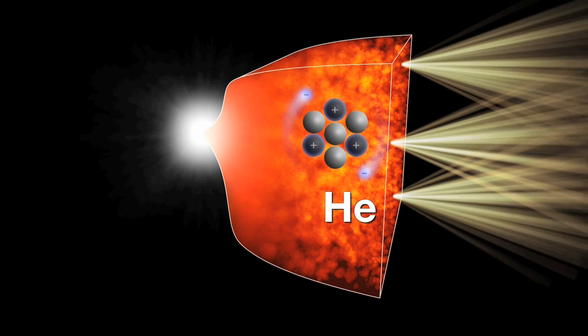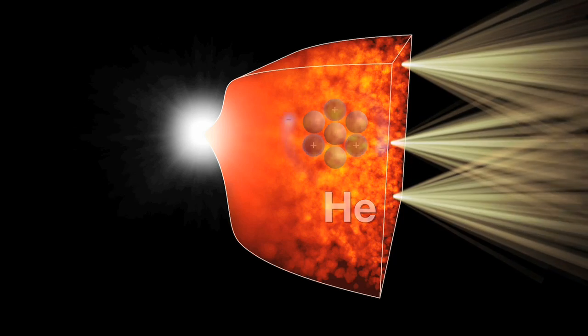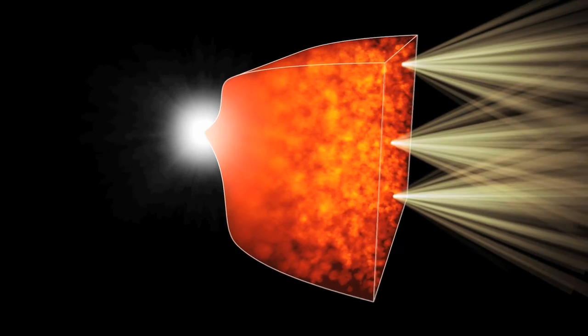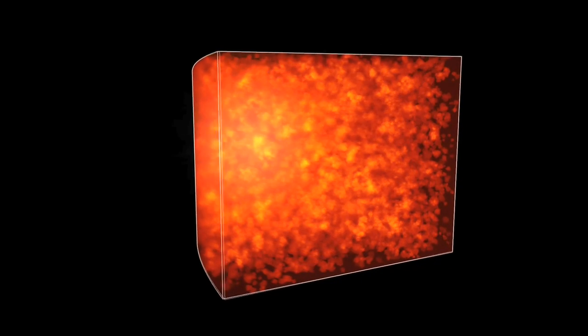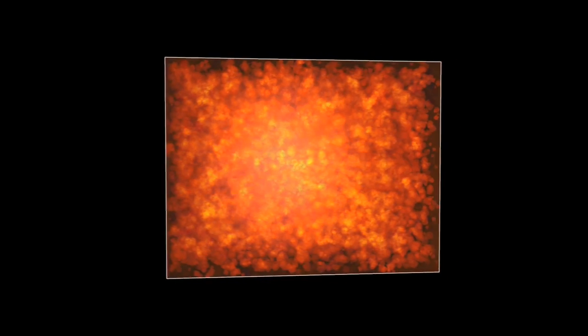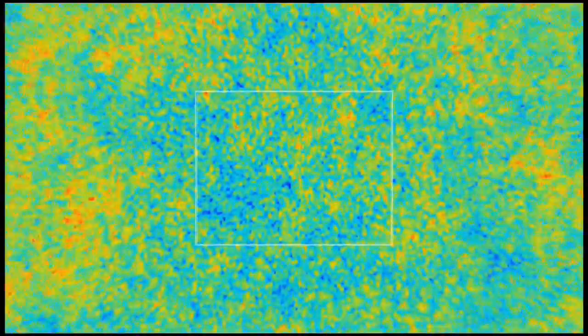By now, the universe had cooled to around 3000 Kelvin, and so the energy of the first free photons was equivalent to infrared wavelengths. Since the universe became transparent, it has expanded more than 1000 times, and the sky has cooled to just 2.7 Kelvin. The wavelength of these ancient photons has now stretched to microwaves.